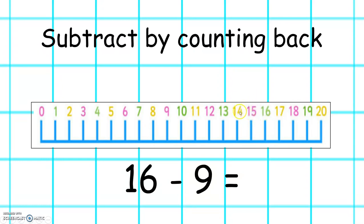1, 2, 3, 4, 5, 6, 7, 8, 9. We land on the number 7, so 16 take away 9 equals 7.